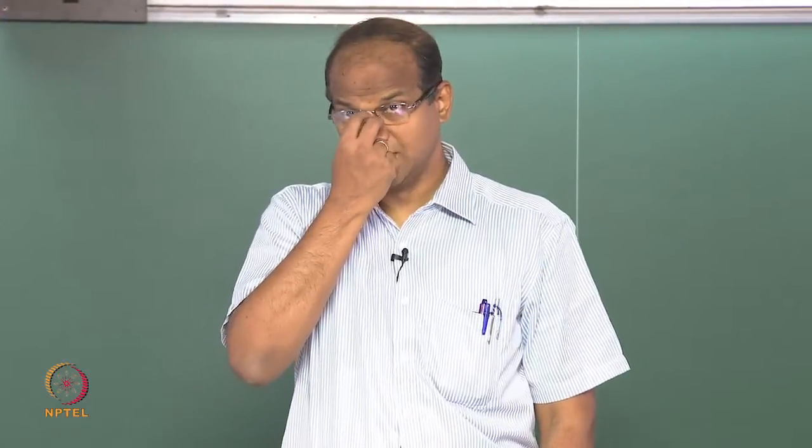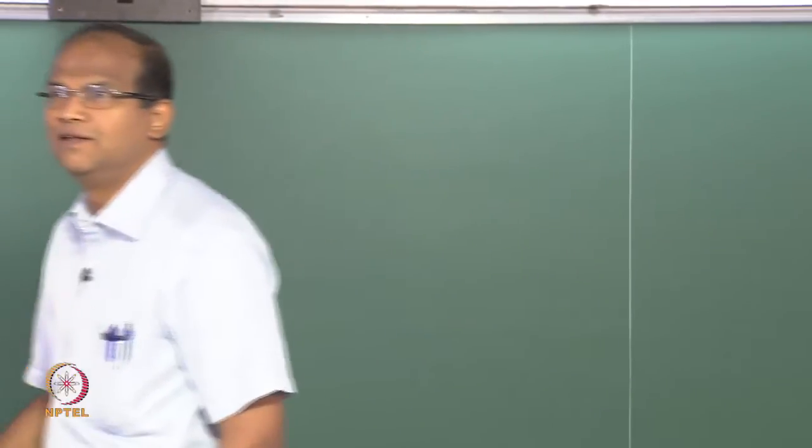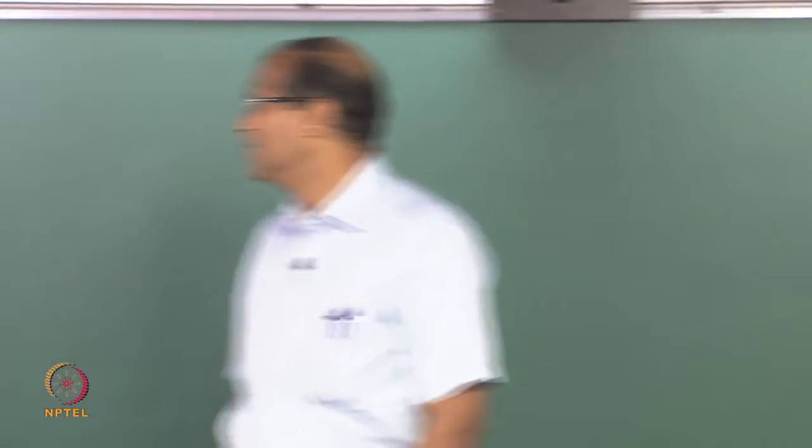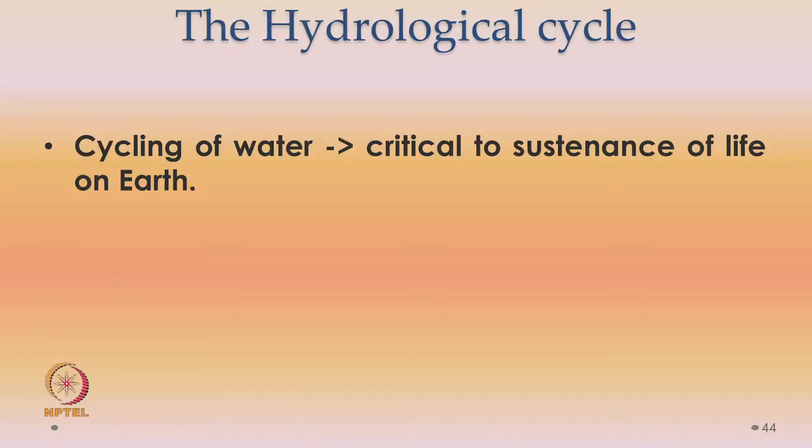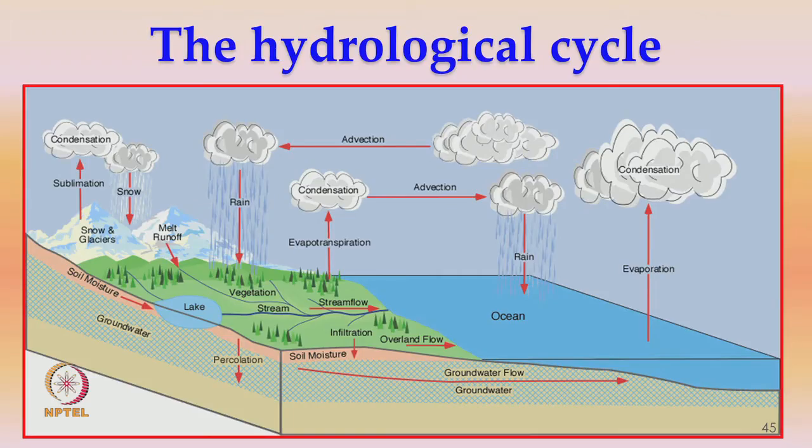We will continue the discussion on the various components of the earth system. Yesterday's class, we started looking at the hydrological cycle. The hydrological cycle is very critical to the sustenance of life on earth. This is basically an overview of the hydrological cycle. We already took a look at it in yesterday's class.